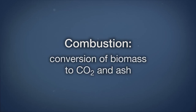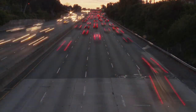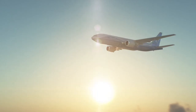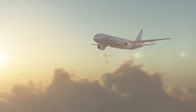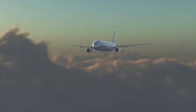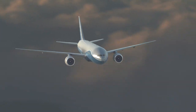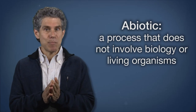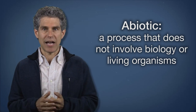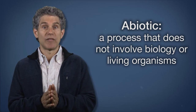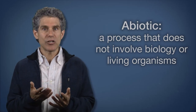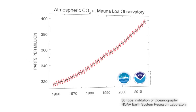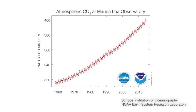Combustion converts fossil fuels or plant matter into CO2 and ash, and in the process heat and energy are released. Many human activities that utilize energy from fossil fuels are based on combustion, and one can argue that many environmental problems are a result of combustion. Combustion is an abiotic process — that is, a process without biology. Since the Industrial Revolution, humans have had a major influence on the carbon cycle by burning fossil fuels, which leads to an increase in atmospheric concentrations of CO2.